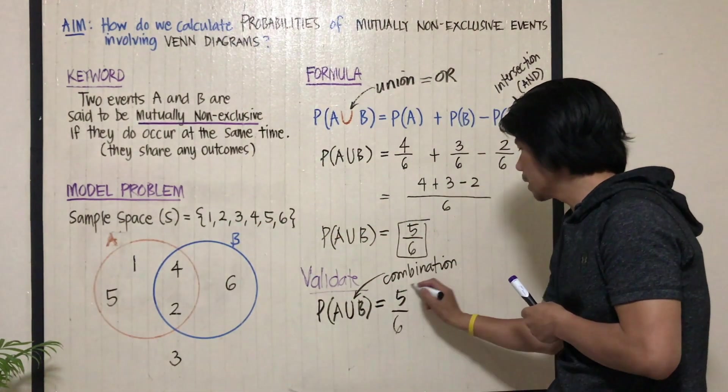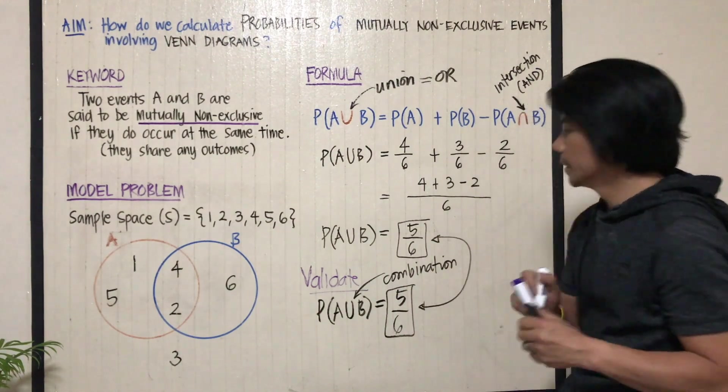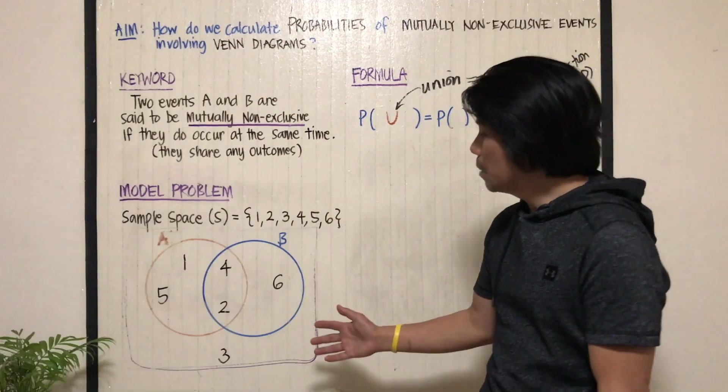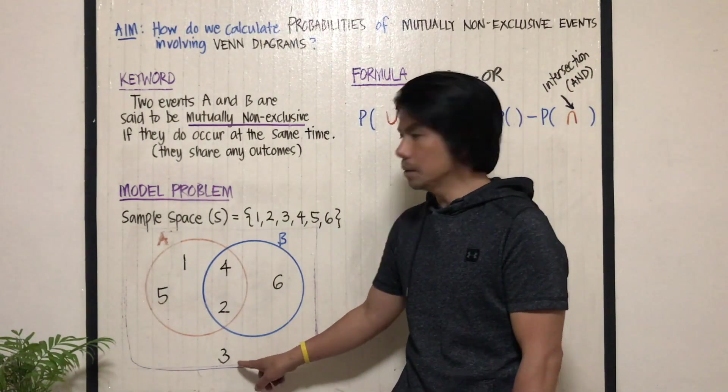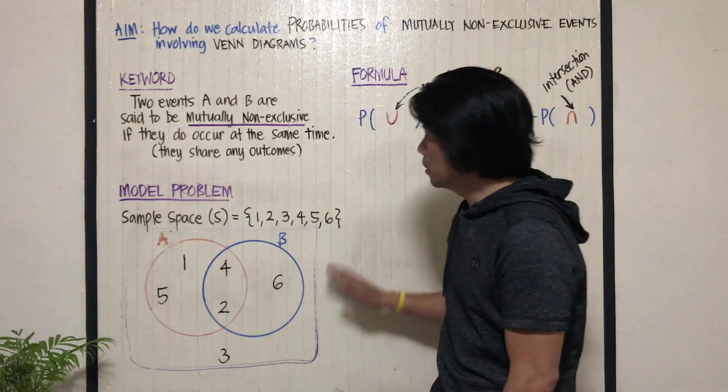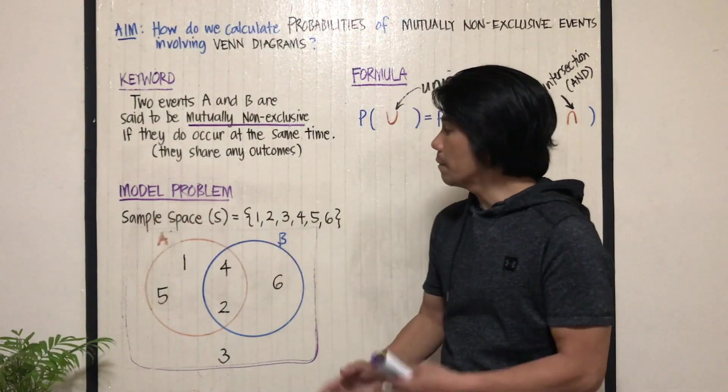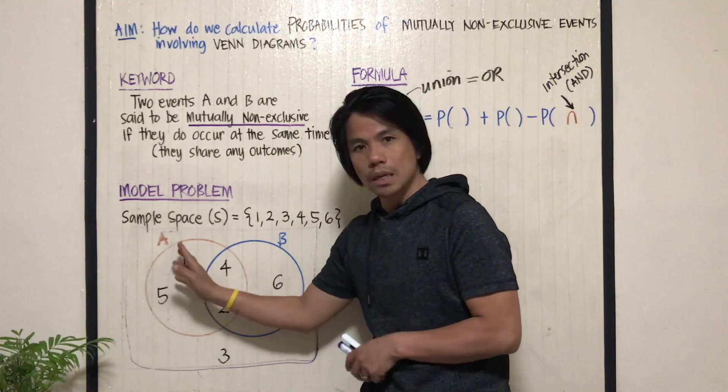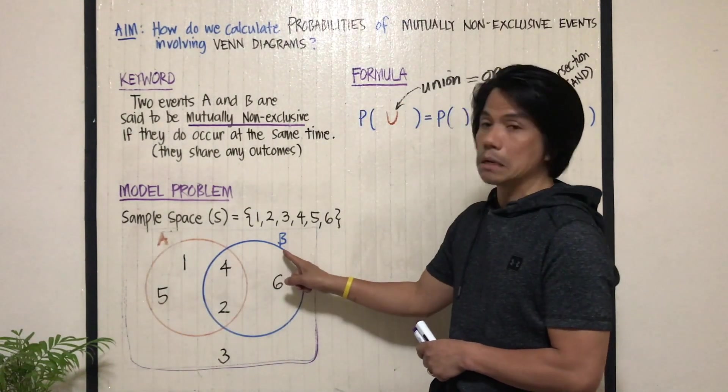And we got the same answer as this. And that's how you validate your answer. Now, you might be wondering, where does this three belong? It belongs to the universal set since it's part of the sample space. However, it doesn't belong to circle A or event A nor event B.